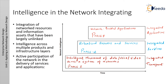Integrating intelligence into the network involves aligning network and business requirements to accommodate today's and tomorrow's network requirements. The Cisco vision of the future includes the Intelligent Information Network, or IIN — a strategy that addresses how the network is integrated with businesses and business priorities. This vision encompasses many features. The first feature is integration of network resources and information assets that have been largely unlinked. Modern converged networks with integrated voice, video, and data require that IT departments and other departments more closely link the IT infrastructure with the network. The second feature is intelligence across multiple products and infrastructure layers.